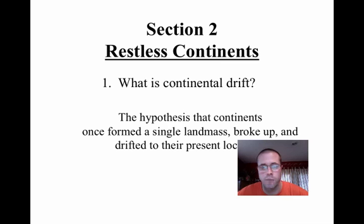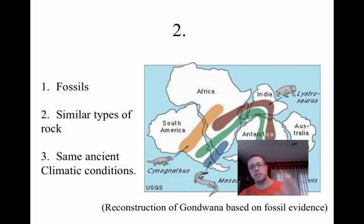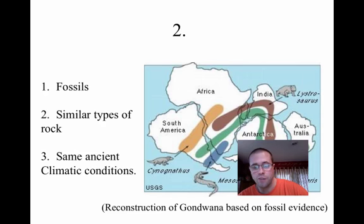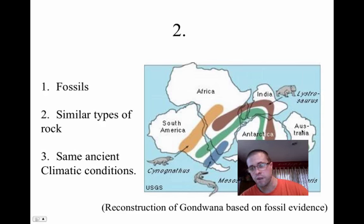Pause if you need to. Number two asks: what three things have been found on separate continents that support the idea of continental drift? First, fossils — you can see the colored bands here showing places where we find fossils of particular species. Second, similar types of rock — we're seeing similar rock layers on the coast of South America and in certain places on the coast of Africa, indicating these puzzle pieces probably did fit together at some point.